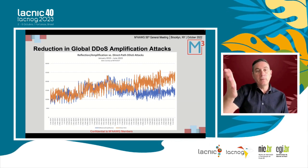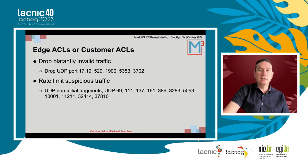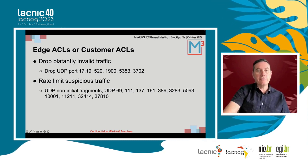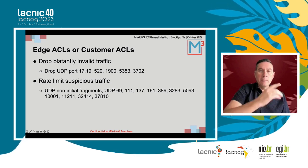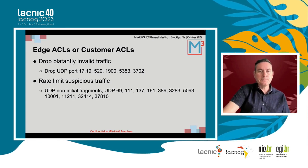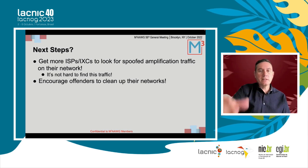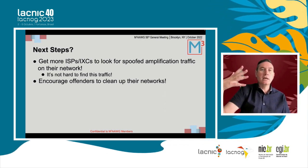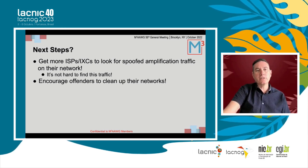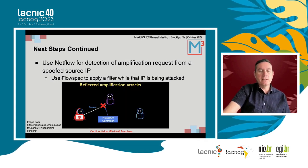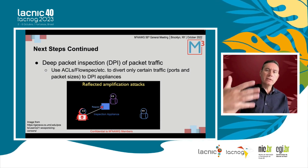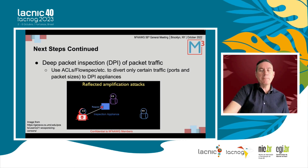If anyone is a MOG member and would like to join and help with this project, please contact me. Some filters can be applied at your edge to drop attack traffic on specific ports, and other traffic can be rate limited to 1% of the interface bandwidth. Next steps include getting more ISPs and internet exchanges to look for spoofed traffic, encouraging others to clean up their networks, looking at using FlowSpec to block this traffic, and potentially using DPI on certain packets to look for amplification request traffic.